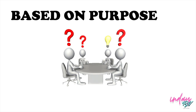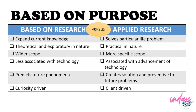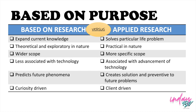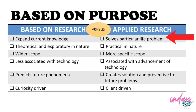Meanwhile, we are going to understand research based on purpose, and we only have two here — based research and applied research. We need to identify the differences. Here in based research, we are actually expanding the current knowledge. Usually, the researches submitted by nursing students are based research, because they are only improving the knowledge and information they have right now. For example, the effect of unhealthy lifestyle in a certain province — like the effect of smoking to adolescents. Here in applied research, we are studying a research to solve a particular life problem.